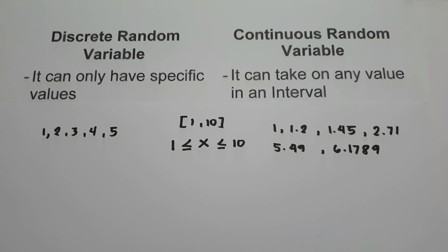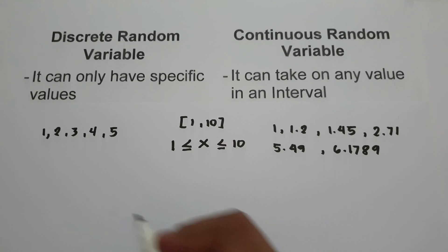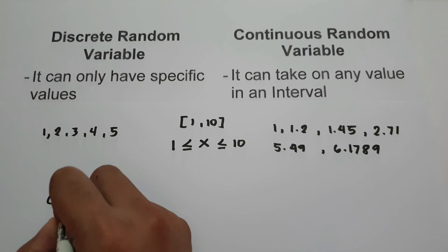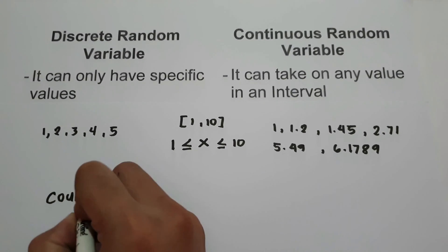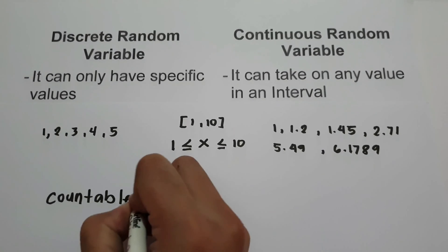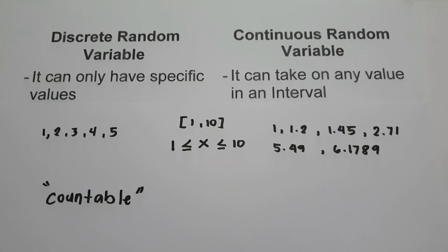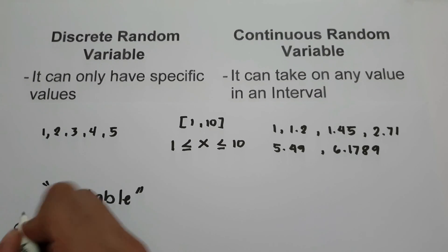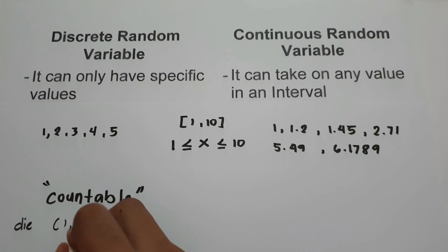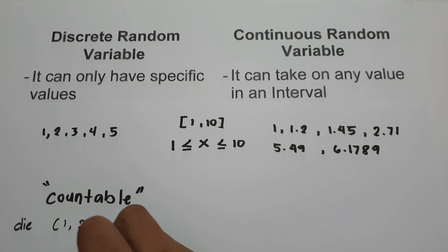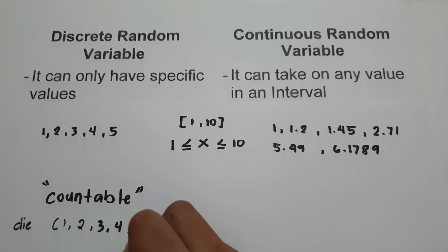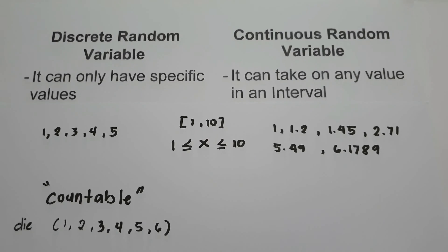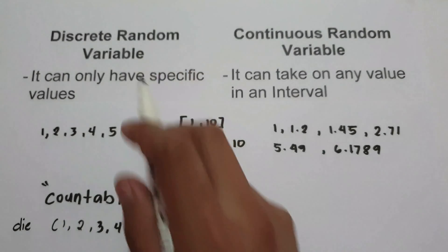In discrete random variable, those are data that can be countable. For example, if we are going to roll a die, you can only have 1, 2, 3, 4, 5, and 6 as an outcome. You are not going to have a decimal number in a discrete random variable.